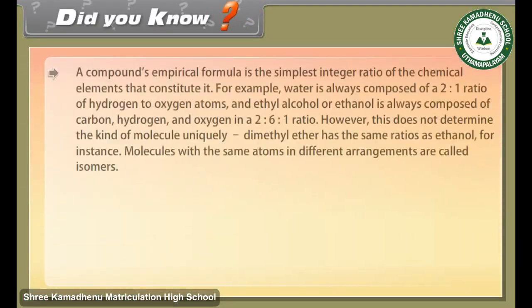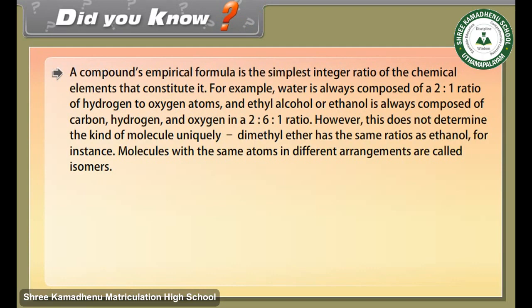Did you know? A compound's empirical formula is the simplest integer ratio of the chemical elements that constitute it. For example, water is always composed of a 2:1 ratio of hydrogen to oxygen atoms, and ethyl alcohol (ethanol) is always composed of carbon, hydrogen, and oxygen in a 2:6:1 ratio. However, this does not determine the kind of molecule uniquely — dimethyl ether has the same ratio as ethanol, for instance.